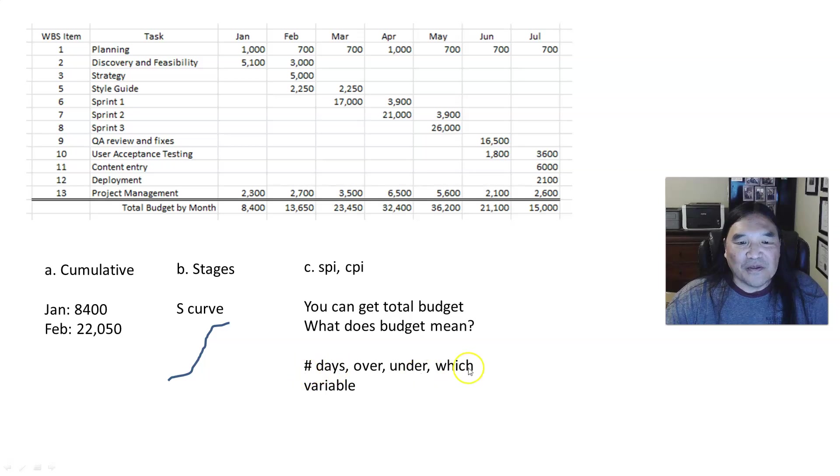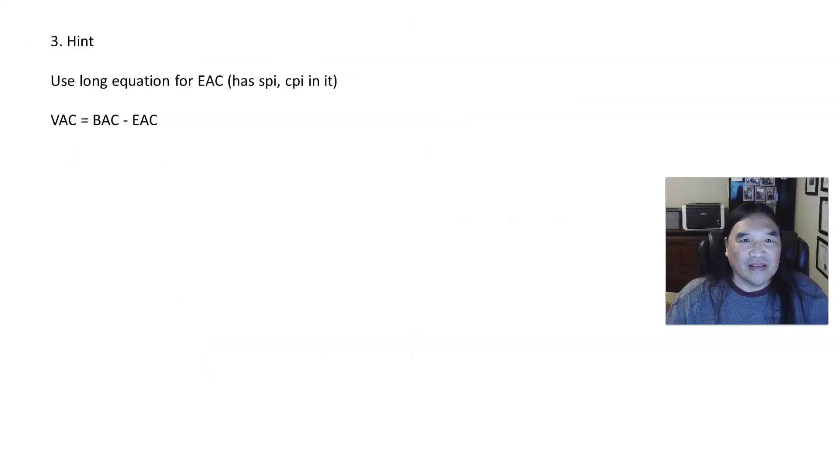And so the thing you need to think about is when I look at SPI and CPI, how many days am I over? How many days are under? And what applies? If it's time, it's going to be SPI. If it's cost, it's CPI. Now, hint. When you have SPI and CPI, use the long equation for EAC. So EAC equals BAC minus AC plus, and then I don't remember the rest of the equation, but you can look it up. And one equation I don't think they have out there is value at completion, and that's BAC minus EAC. So that tells me if I want to figure that out, I need to figure out what those two things are.